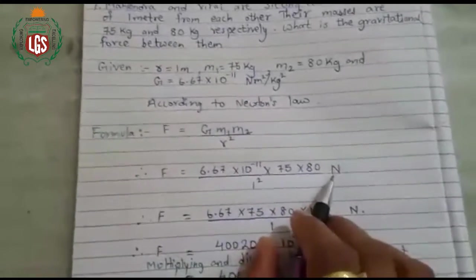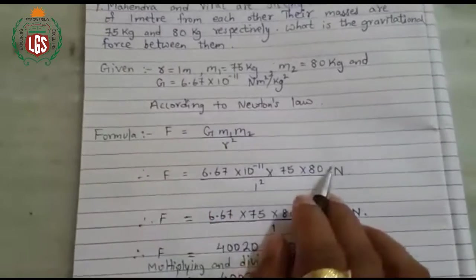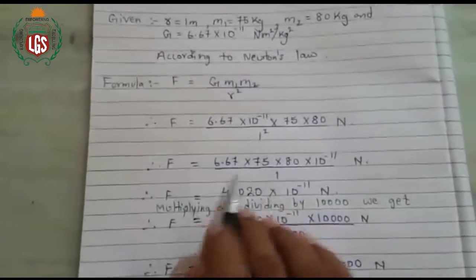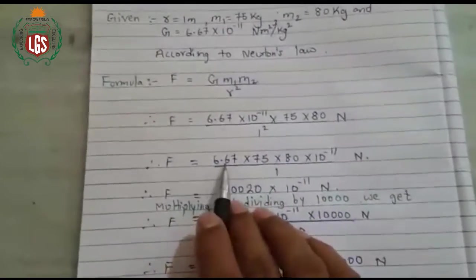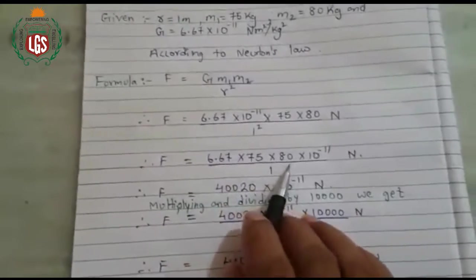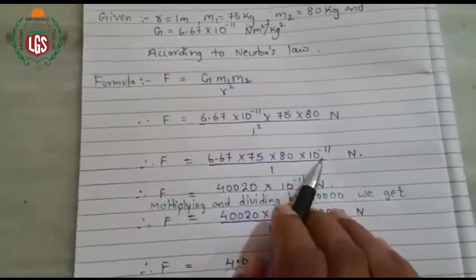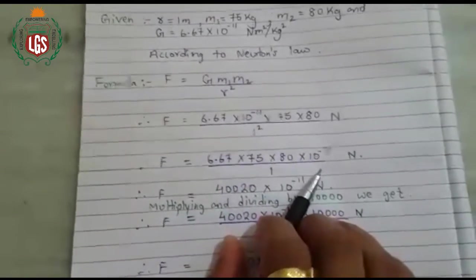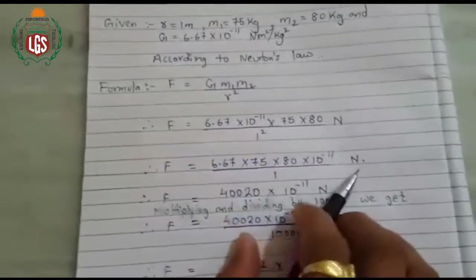Here is given Newton. Newton, why? Because force, the unit of force is Newton. Then next step, force is equal to 6.67 into 75 into 80 into 10 raise to minus 11 upon 1 Newton.